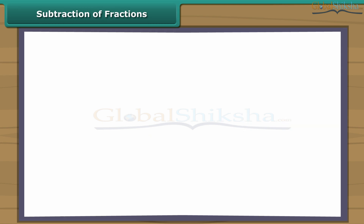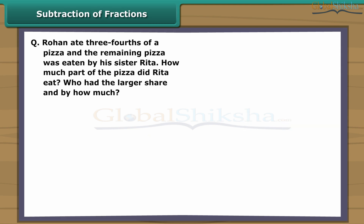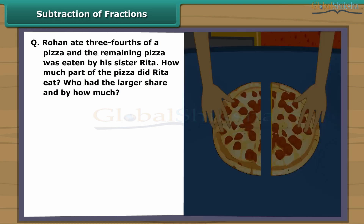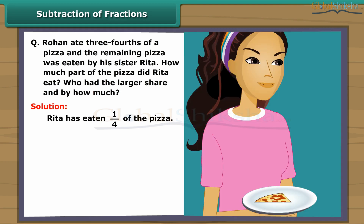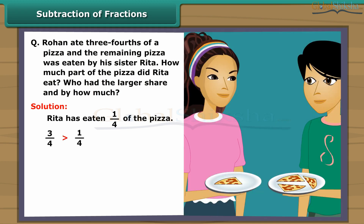Subtraction of Fractions. Rohan ate three-fourths of a pizza and the remaining pizza was eaten by his sister Rita. How much of the pizza did Rita eat? Who had the larger share and by how much? Look at the figure — it shows that Rita ate one-fourth of the pizza. Comparing three-fourths and one-fourth, three-fourths is greater than one-fourth.